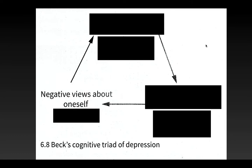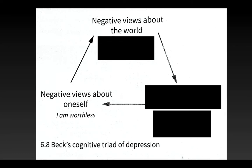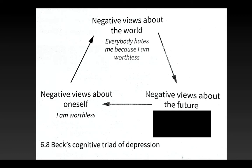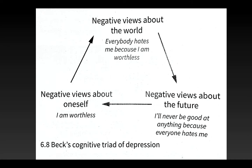Beck came up with the cognitive triad of depression — three characteristics. First, a negative view about oneself: 'I'm worthless.' Second, that extends to a negative view about the world: 'Everybody hates me because I'm worthless.' Third, a negative view about the future: 'I'll never be good at anything.' This becomes almost a self-fulfilling prophecy — a cycle that's very difficult to break. People with depression often have these depressive cycles going in their head.